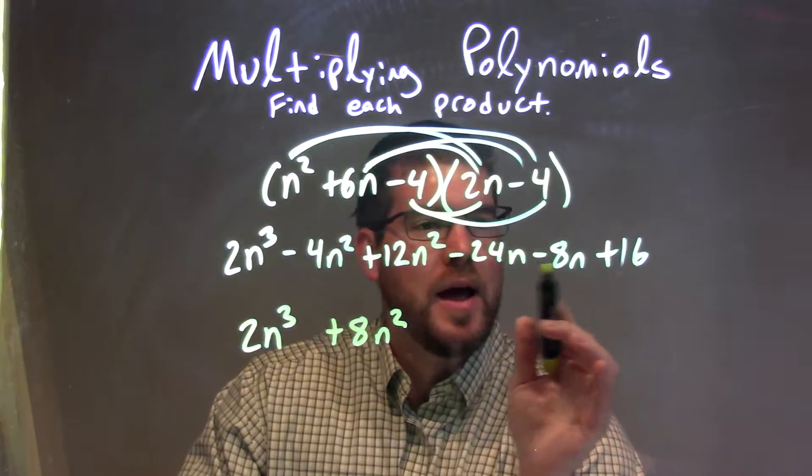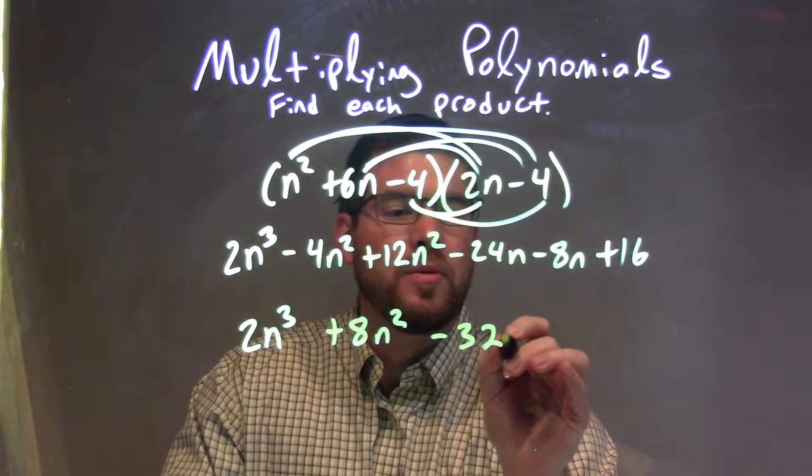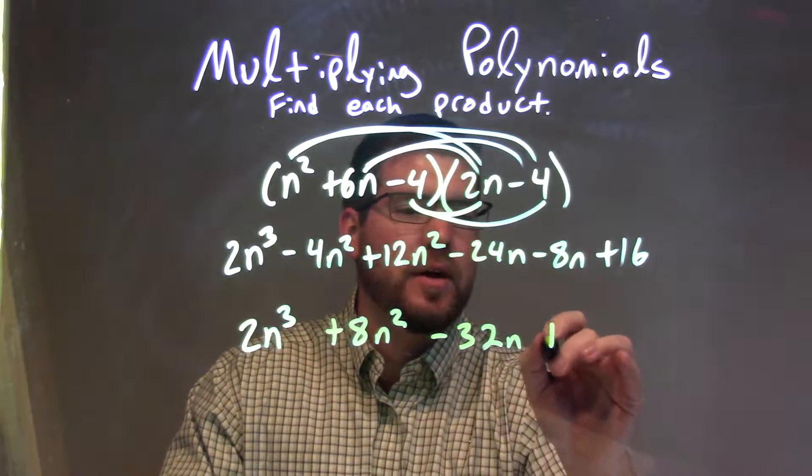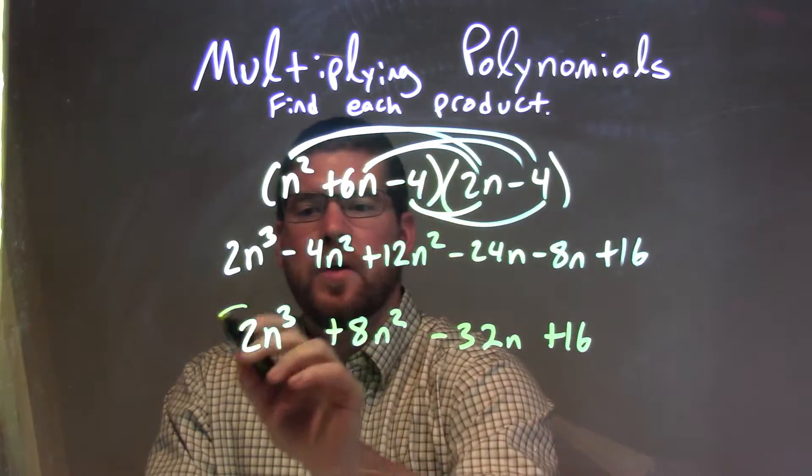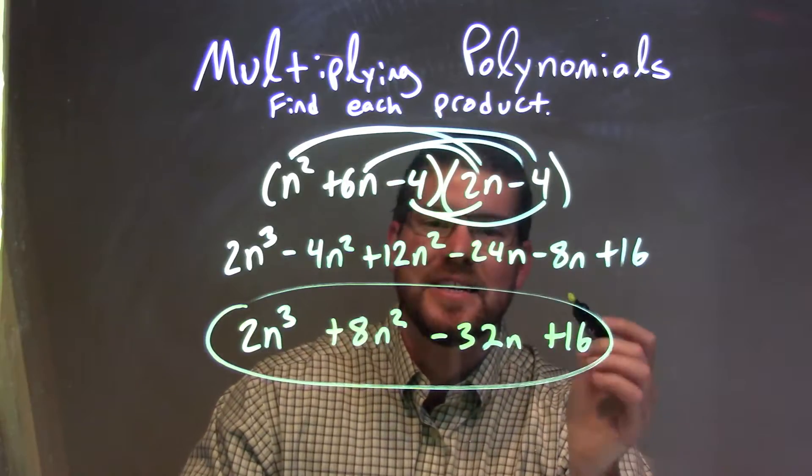Now we have minus 24n minus 8n. That comes out to be minus 32n. And lastly, we have a plus 16. And so our final answer here is 2n to the third plus 8n squared minus 32n plus 16.